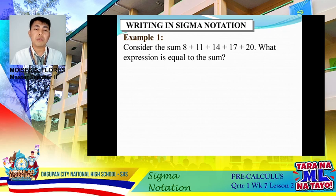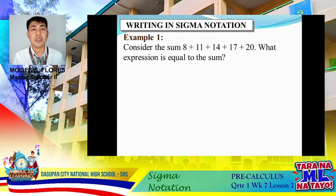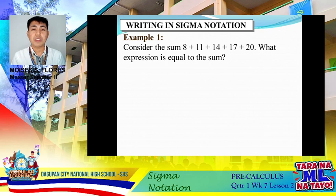Looking at the given: 11 minus 8 is 3, 14 minus 11 is 3, 17 minus 14 is 3, 20 minus 17 is 3. So we have a common difference of 3, meaning we use an arithmetic series, with first term a₁ = 8.